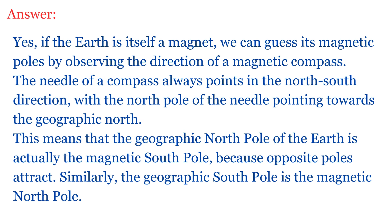Answer: Yes, if the earth is itself a magnet, we can guess its magnetic poles by observing the direction of a magnetic compass. The needle always points in the north-south direction, with its north pole pointing towards the geographic north. This means the geographic north pole of the earth is actually the magnetic south pole, because opposite poles attract. Similarly, the geographic south pole is the magnetic north pole.